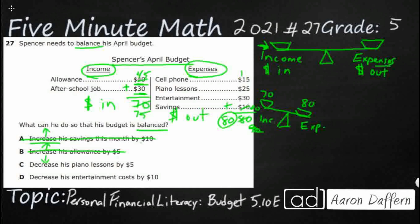Option C: decrease his piano lessons by $5. We had $70 income; piano lessons was $25, so bringing that down to $20 means expenses come down from $80 to $75 — but the original income is $70, so $75 still doesn't work. Option D: decrease entertainment by $10. Take that out by $10 and expenses get down to $70 — which matches his income. So the answer is D.